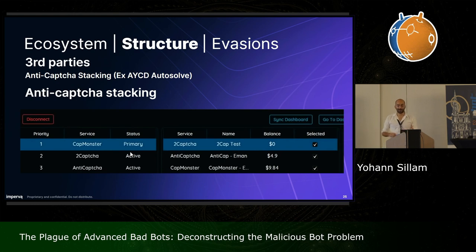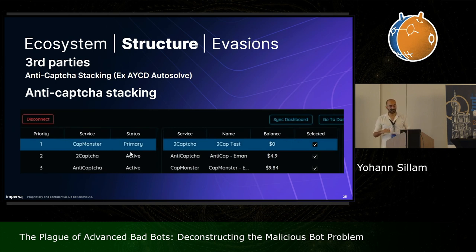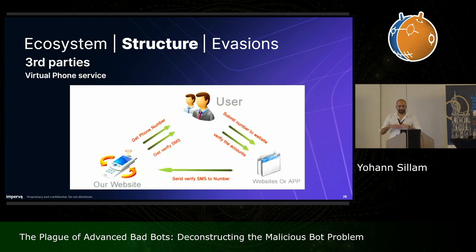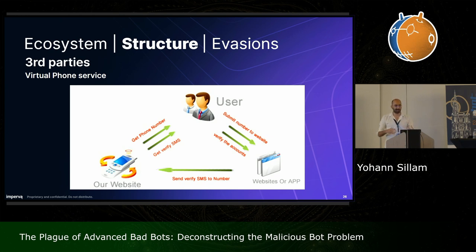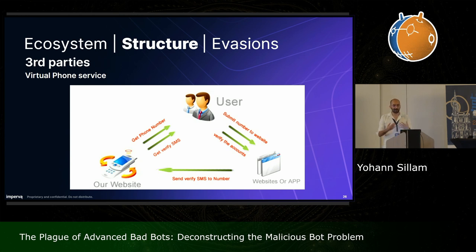Another interesting third party is AYCD AutoSolve, which gives the ability to do anti-captcha stacking — meaning you give priority to your anti-captcha solutions, and it first tries to solve via the first solution, then jumps to the next one if it fails. Something very useful, especially for account generation bots, is a virtual phone service provider — phones rented somewhere in the world that give a bot the ability to receive one-time codes during the registration process, enabling a completely automated flow for account generation.